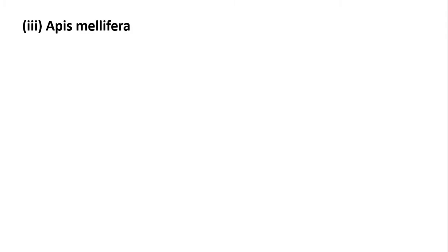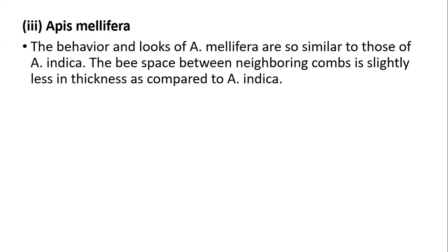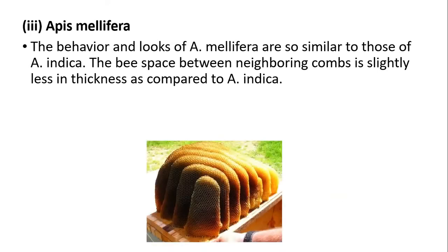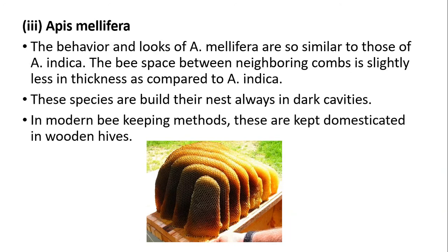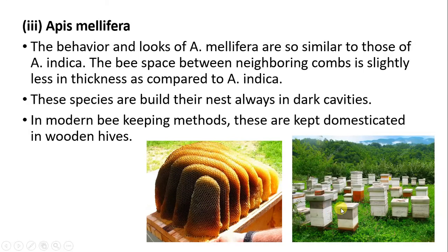The nesting behavior of Apis mellifera and Apis indica are very similar. The bee space between neighboring combs is slightly less in thickness in Apis mellifera compared to Apis indica. Apis mellifera also prefers to construct the hive in darker places and dark cavities. However, Apis mellifera is commonly used in modern beekeeping methods, where the honeybees are domesticated in wooden hives.